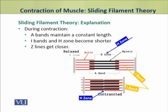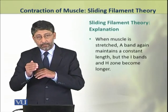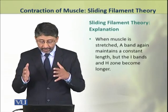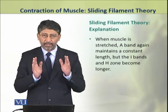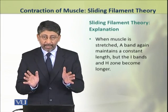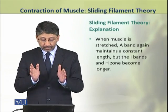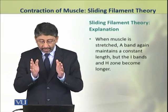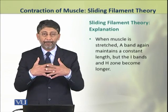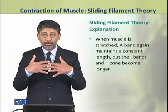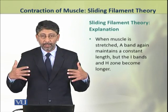The overall effect is shortening of the sarcomere, which is why the two successive Z lines move closer together. When the muscle is stretched, the A-band again maintains its size, but the I-band and H-zone become longer because the overlap between thick and thin filaments is reduced.